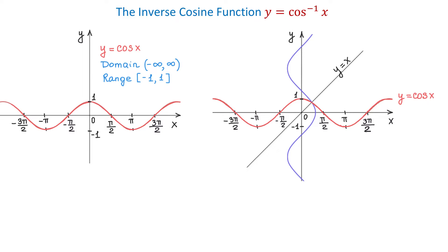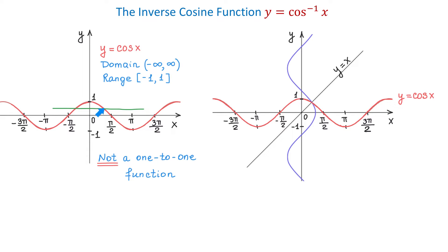To find the inverse of a function we need to interchange x and y. But the problem with the cosine function is that on the interval from negative infinity to positive infinity this function is not a 1-to-1 function. This means that if we draw a horizontal line over the graph, it will not pass the horizontal line test. This test tells us that if a horizontal line crosses the graph in more than one point, then the function does not have an inverse.